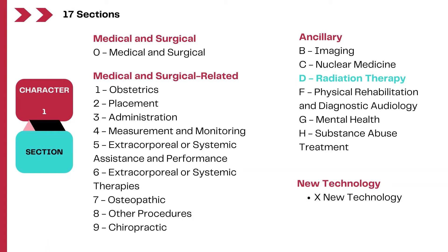These are the 17 sections in the PCS, and today we are talking about the radiation treatment section. Procedures such as intraoperative radiation therapy, brachytherapy, stereotactic radiotherapy, photon beam radiation, or electron beam radiation — all these are examples of radiation treatments and are coded to this section.